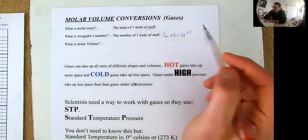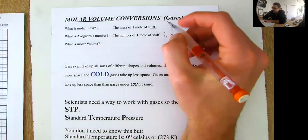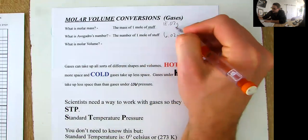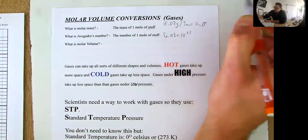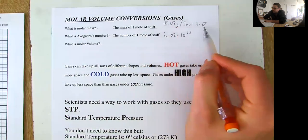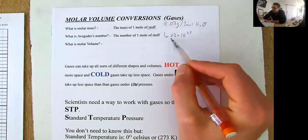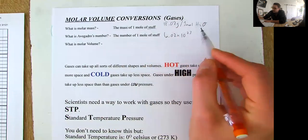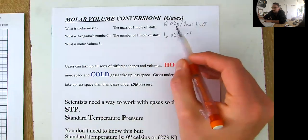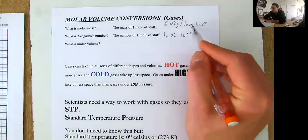So that means that if I have my 18.02 grams per one mole of H2O, what that means, what this one mole of H2O means is that if there's 6.02 times 10 to the 23rd molecules of H2O, that means it's going to weigh 18.02 grams. Just to be clear,